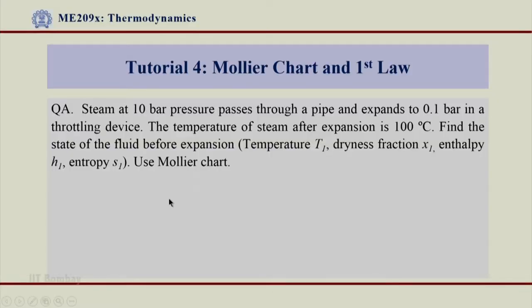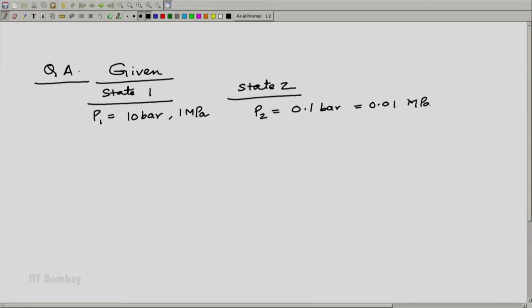So, let us solve this problem. Tutorial 4 question A, what is given to us? We have got state 1 and we got state 2. What we know about state 1 is P1 is equal to 10 bar or 1 MPa and P2 is equal to 0.1 bar, also what has been told is the temperature after expansion which happens from 1 to 2. So, T2 is equal to 100 degree centigrade or 373 Kelvin.